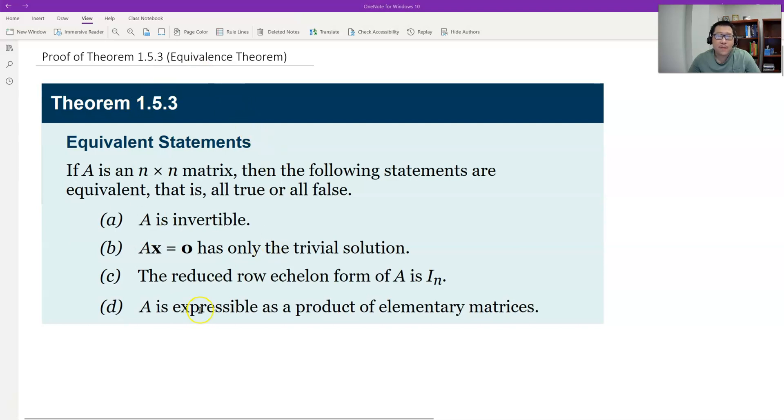This is one of the most important theorems in linear algebra. This theorem gives us equivalent statements for the invertibility of a square matrix. Here we have A, so A is invertible. What kind of condition do we have? The equivalent of B or equivalent to C or D.